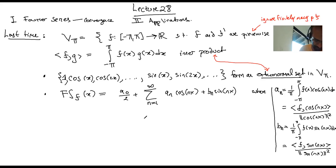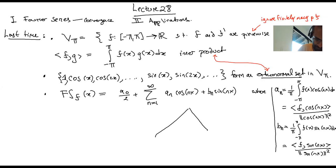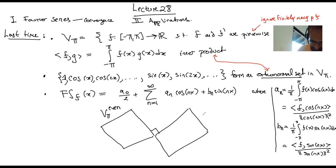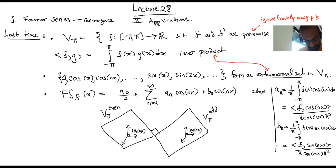We had a picture associated with this inner product space. Inside V_π we have two orthogonal subspaces: the even functions and the odd functions. Inside each one we have an orthogonal set — here we have the cosines, and here we have the sines. We just defined this series; we didn't actually say how it relates to the original function. That's what we're going to do now — we're going to prove that essentially this series is always equal to the function, implying these act like an infinite orthogonal basis.